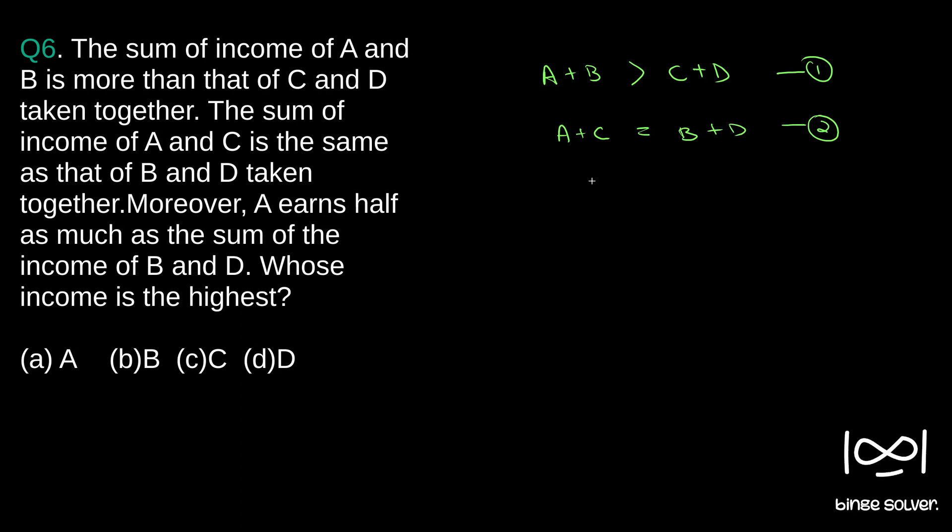Moreover, A earns half as much as the sum of income of B and D. A earns half that much as of B and D. So, this is our equation 3. Whose income is the highest.